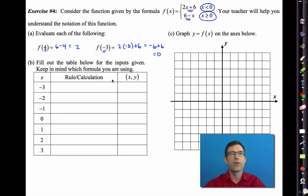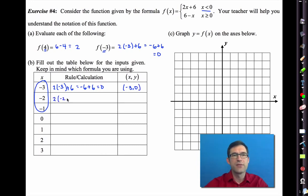That's just how we evaluate it based on values of x and based on the formula we're given. Now let's create a table. So we always want to keep in mind which thing we're using. For every x value less than 0, we have to use 2x plus 6. So for every x value less than 0, and that's going to be all of these, we have to use the rule 2x plus 6. Now we already kind of did it for negative 3. And we're going to get negative 3 comma 0. Likewise, 2 times negative 2 plus 6 gives me negative 4 plus 6 gives me 2. So negative 2 comma 2. Let's see, 2 times negative 1 plus 6, negative 2 plus 6, which is 4. So I get negative 1 comma 4.